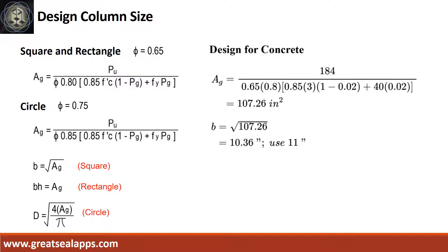Given factored load of 184 kips, the gross area of section is 107.26 square inches, for a side of 11 inches.